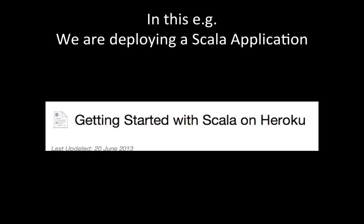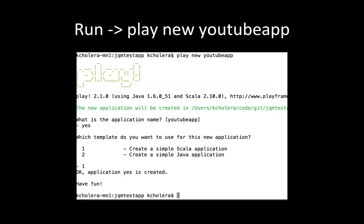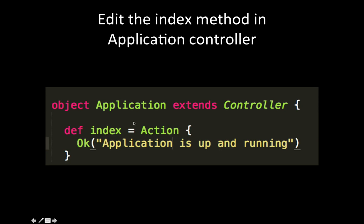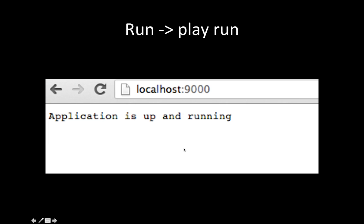In this case, our jQuery Mobile app is going to have a Scala app as the backend. I'm going to use Scala as the backend and choose the 'Getting Started with Scala on Heroku' document — it's a pretty good doc to take a look at. I'm going to create a new Play app by running 'play new myappname' and naming it YouTube App. Once I create the app, I can change the index action in the application controller to some text, and test that the app is running using 'play run'.